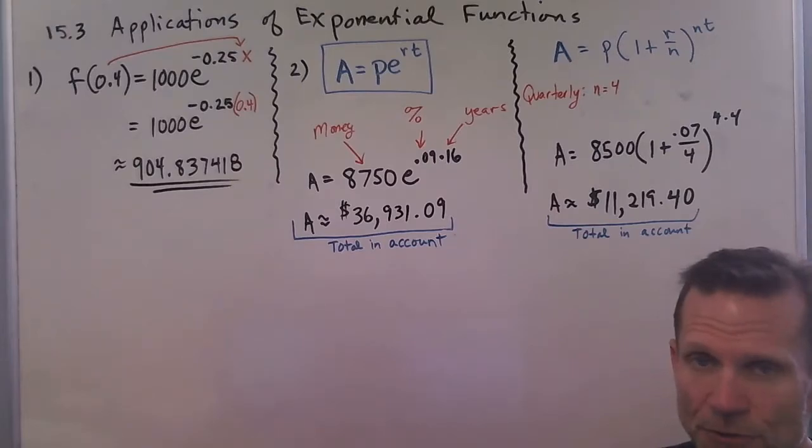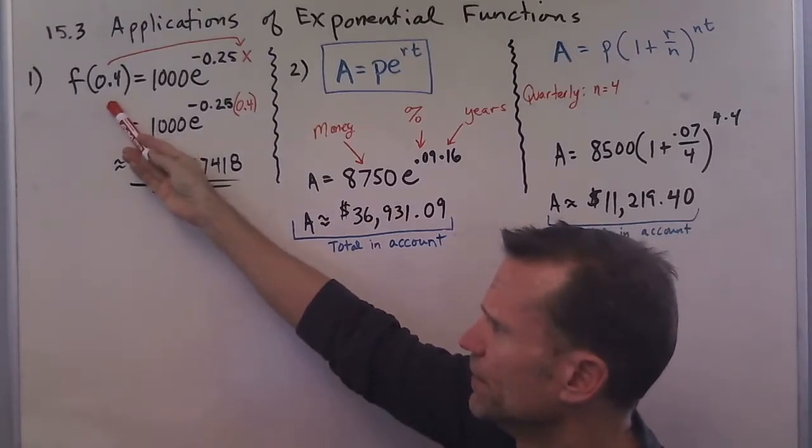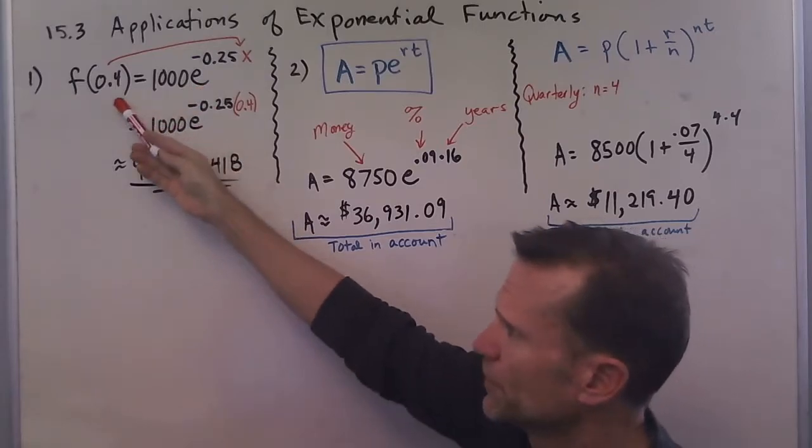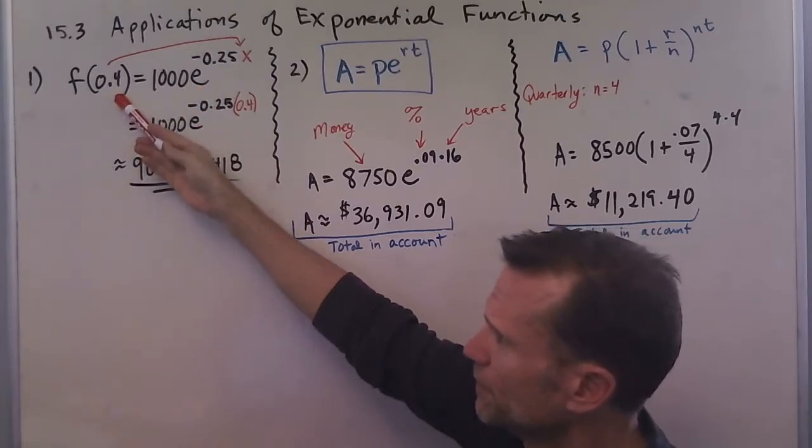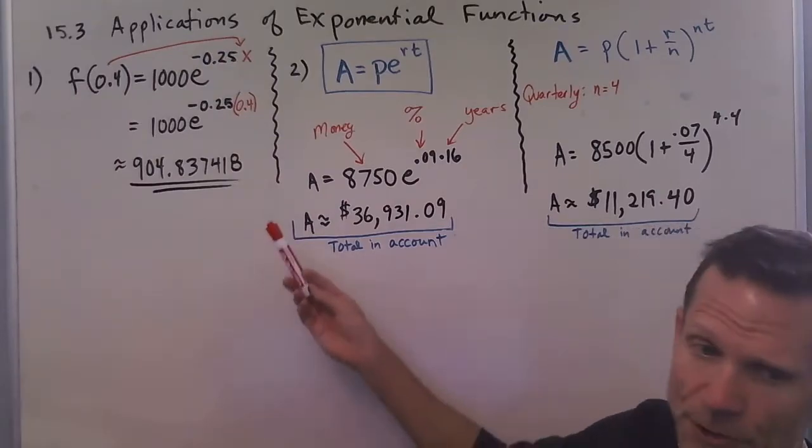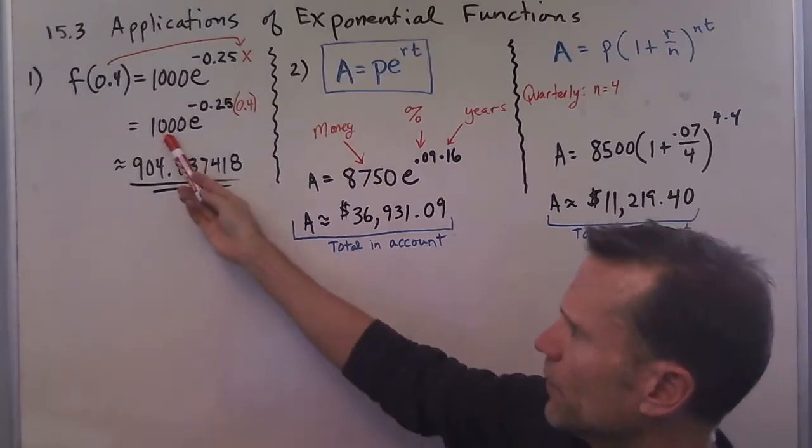This first problem gives you a formula that says f(0.4) equals this. What you do here is substitute this input value, like we've been doing all along this module. You substitute in for x. You can see I wrote out what you would type into your calculator.